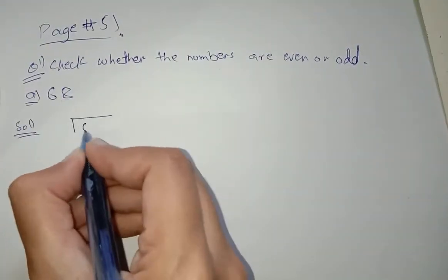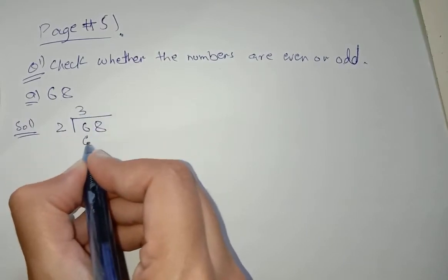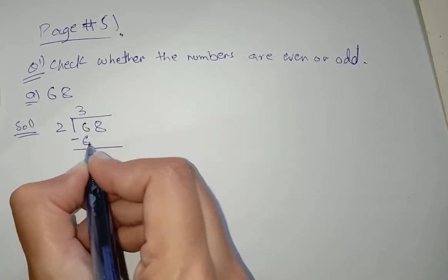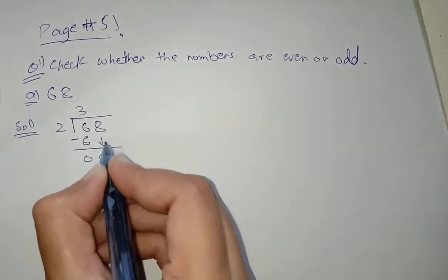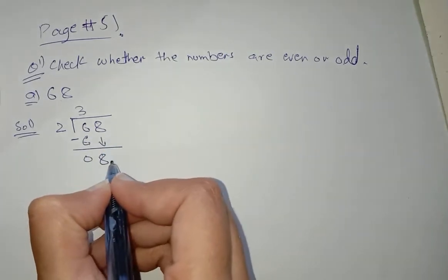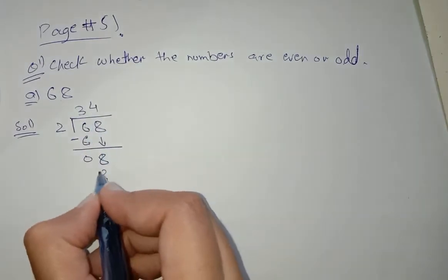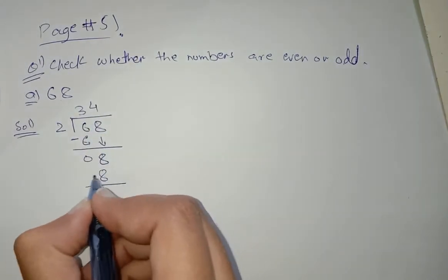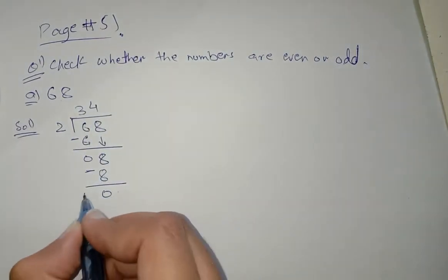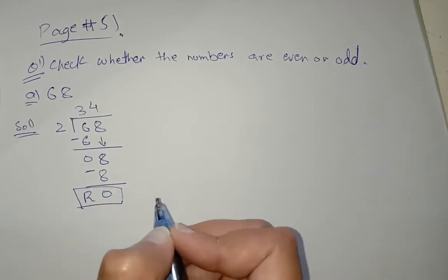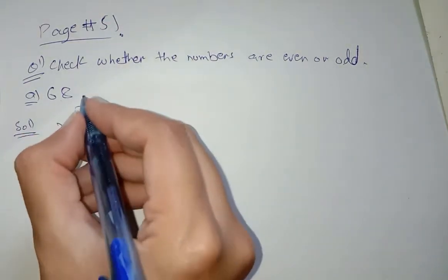We divide 68 by 2. Two threes are six — subtract, the answer is zero. Bring down 8. Two fours are eight — subtract, the answer is zero. The remainder is zero, so 68 is an even number.